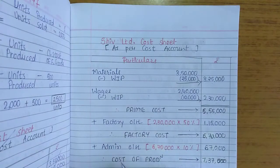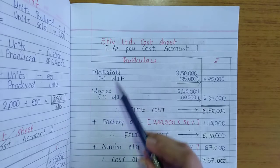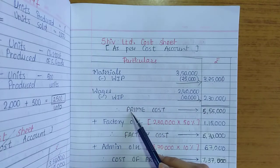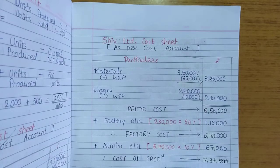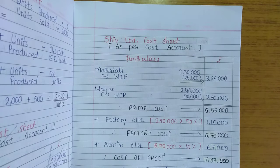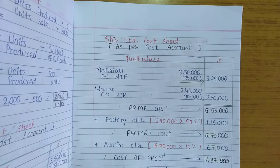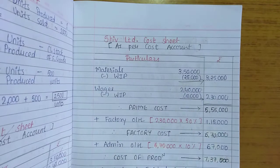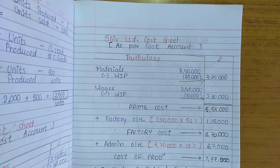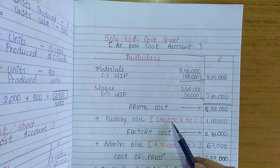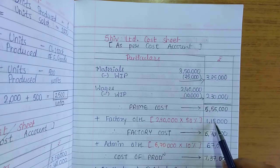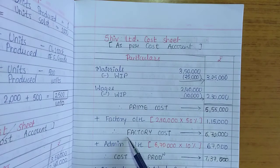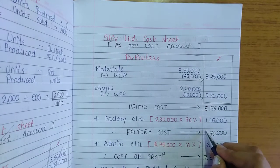Now add factory overheads. The cost accounting condition states factory overheads are 50% of wages. Net wages in the cost sheet are Rs. 2,30,000; 50% of that gives factory overheads of Rs. 1,15,000. Adding to prime cost, our second cost — factory cost — comes to Rs. 6,70,000.